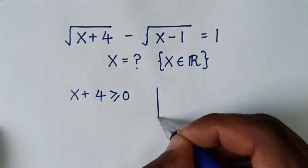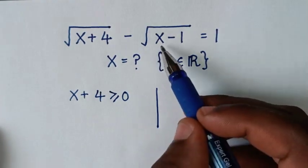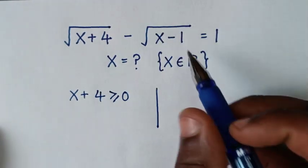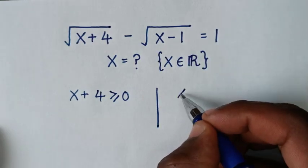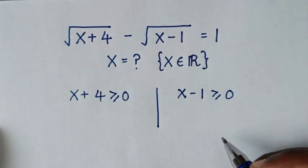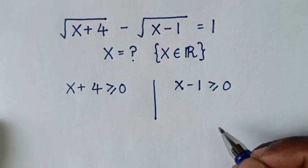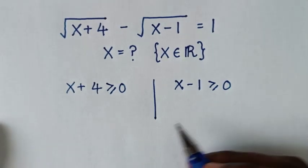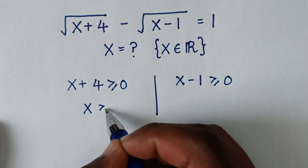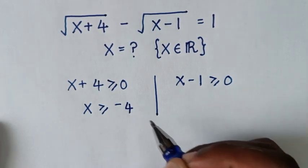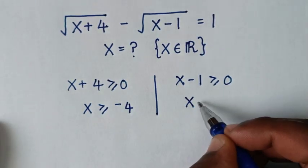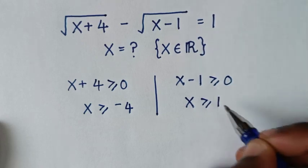We also have the other condition for square root of (x minus 1). For x to be a real number, x minus 1 should be greater than or equal to 0. From these two inequalities, taking 4 to the other side gives x greater than or equal to negative 4, and taking negative 1 to the other side gives x greater than or equal to 1.